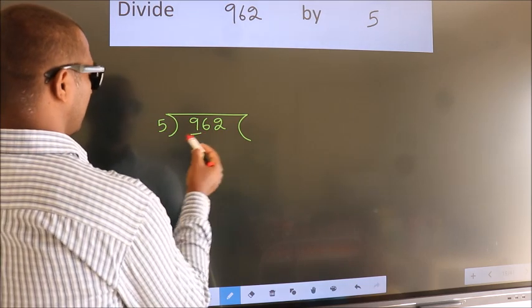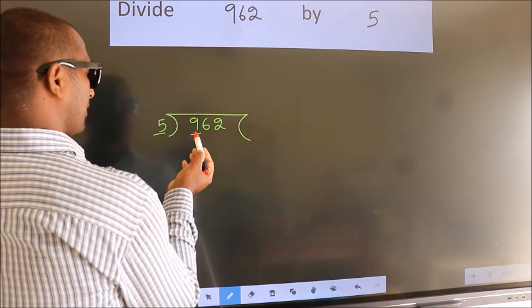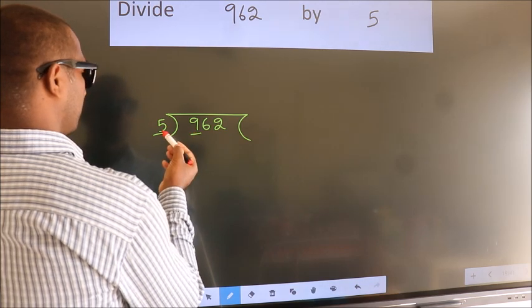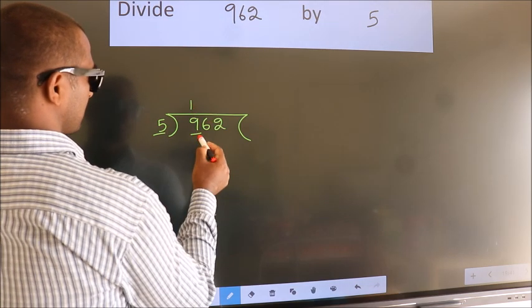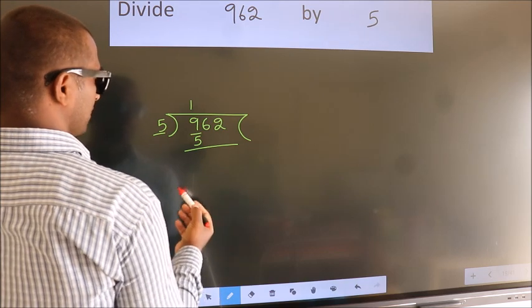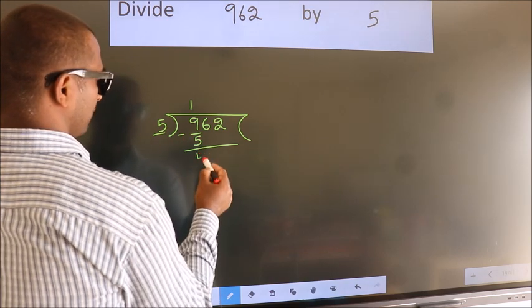Here we have 9. Here 5. A number close to 9 in 5 table is 5 once 5. Now we should subtract. We get 4.